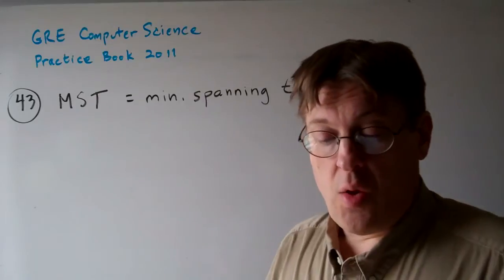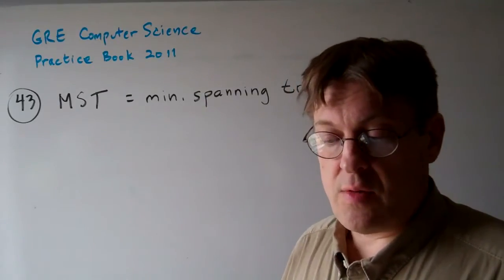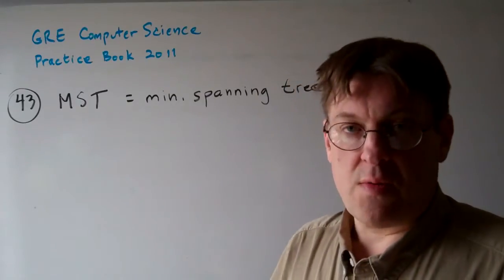Question 43. Which of the following properties must be true of a minimum spanning tree, MST, of a connected graph with at least three edges?